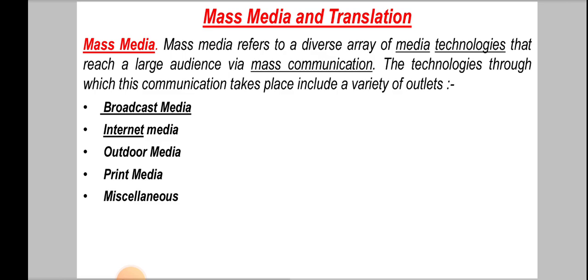In miscellaneous, many other mass media outlets have an additional presence on the web by such means as linking or running TV ads online, or distributing QR codes in outdoor or print media to direct mobile users to a website. In this way, they can use the easy accessibility and outreach capabilities the internet offers, thereby easily broadcasting information throughout many different regions of the world simultaneously and cost efficiently.